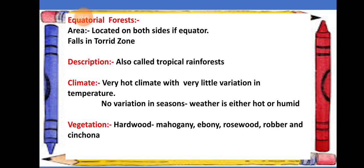Now, the climate. Equatorial forests have a very hot climate with very little variation in temperature. There is no variation in seasons — it is always hot there. The weather is either very hot or humid, meaning there is a lot of moisture present in the air in the equatorial forest region.